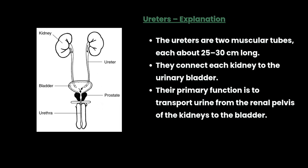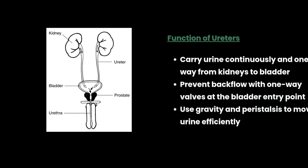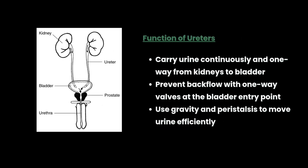Next, the ureter. The ureters are two muscular tubes, each about 25 to 30 cm long. They connect each kidney to the urinary bladder, and their primary function is to transport urine from the renal pelvis of the kidney to the bladder. They carry urine continuously and one-way from kidney to bladder, prevent backflow with one-way valves at the bladder entry point, and use gravity and peristalsis to move urine efficiently.